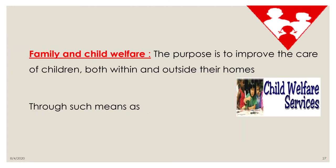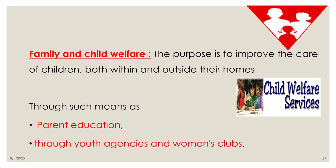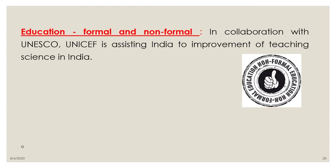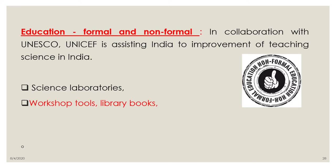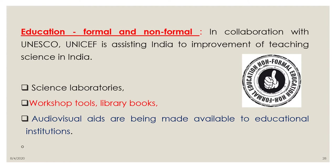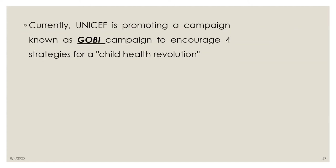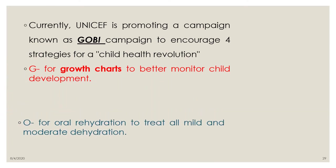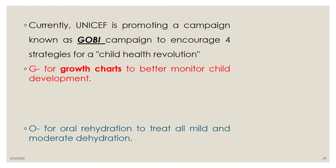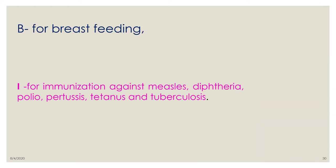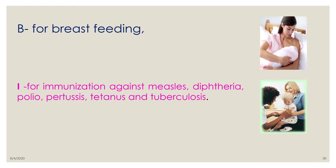For family and child welfare, UNICEF aims to improve care of children both within and outside their homes, through parental education and women's clubs. In education, UNICEF collaborates with UNESCO to assist countries in improving science teaching through science laboratories, workshops, library books, and audio-visual aids. UNICEF also promotes the GOBI campaign: G — growth charts to monitor child development; O — oral rehydration to treat dehydration; B — breastfeeding; I — immunization.